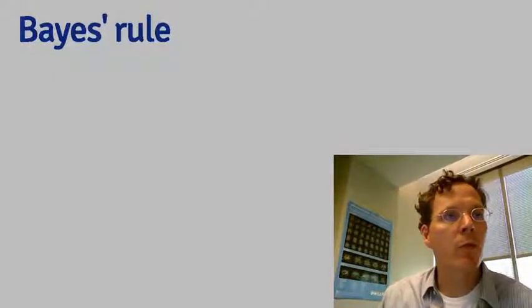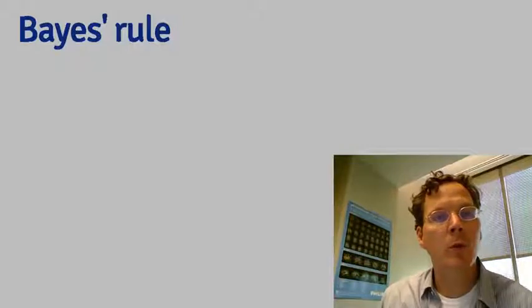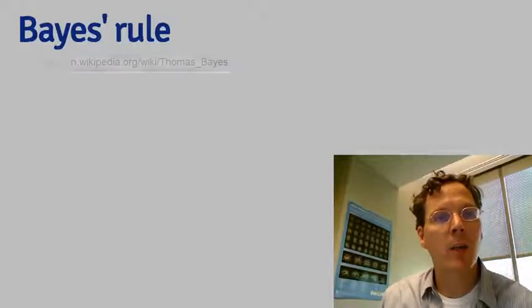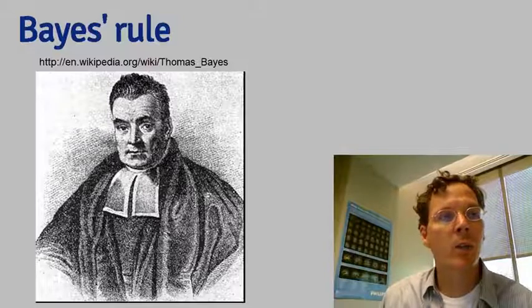Perhaps one of the most famous uses of conditional probability is so-called Bayes' rule. This rule was named after a Presbyterian minister named Thomas Bayes who had his work published posthumously.